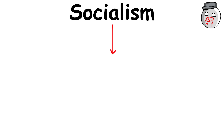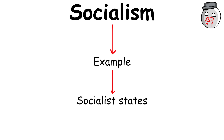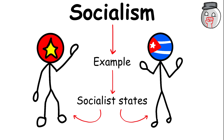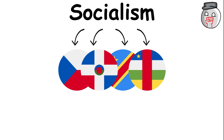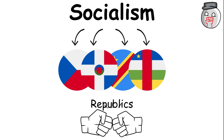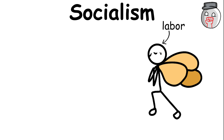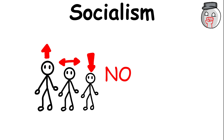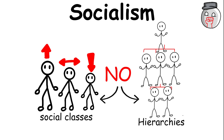Some of the more common examples of socialist states are the People's Republic of China and the Republic of Cuba. While most socialist states call themselves republics, they usually follow the fundamentals of socialism, where labor and property are equitably distributed and there are no social classes or hierarchies.